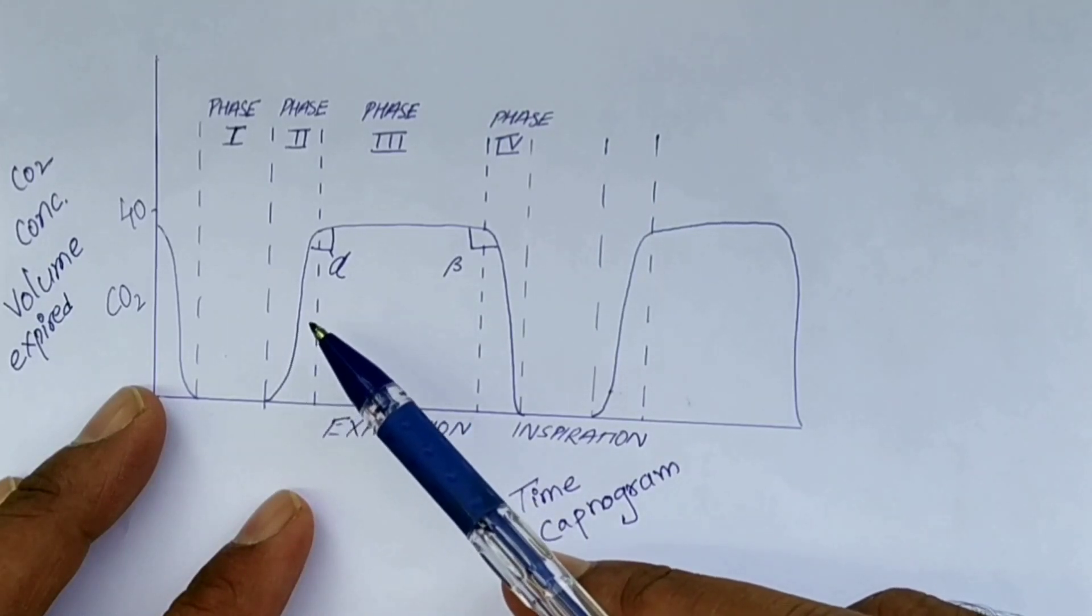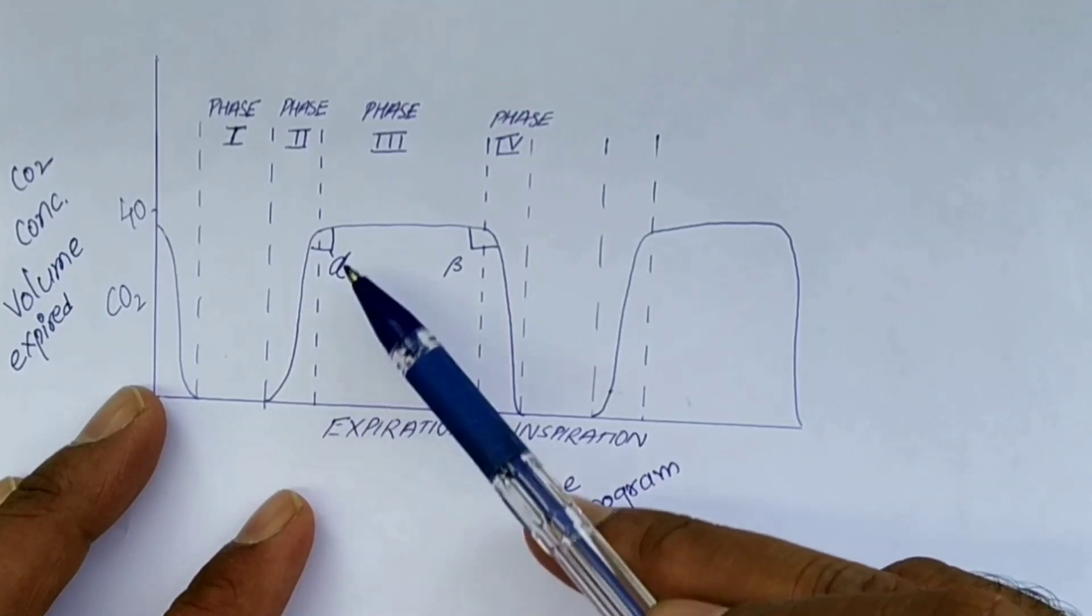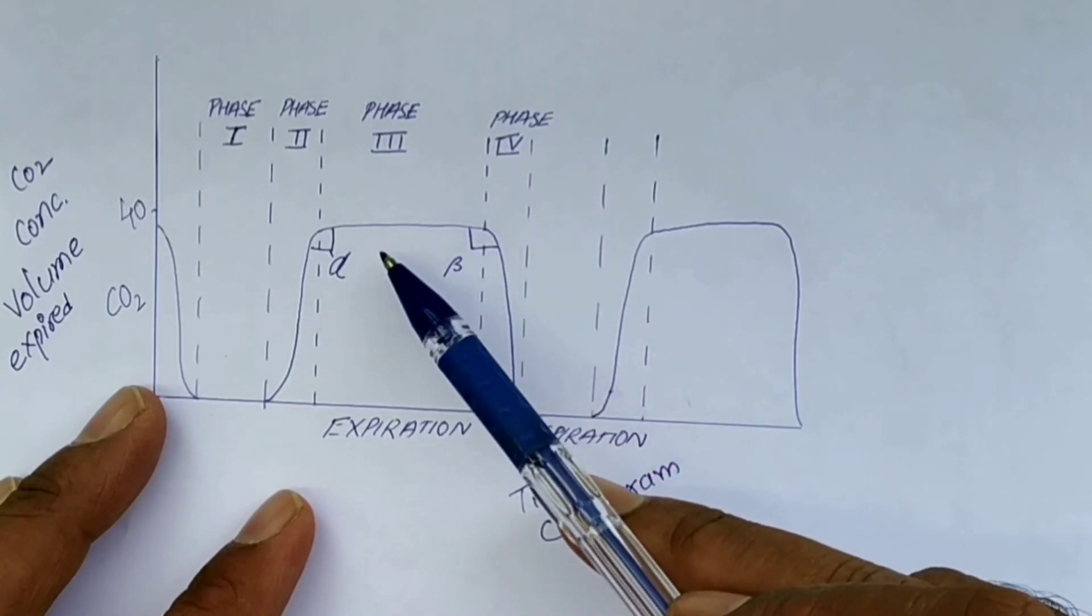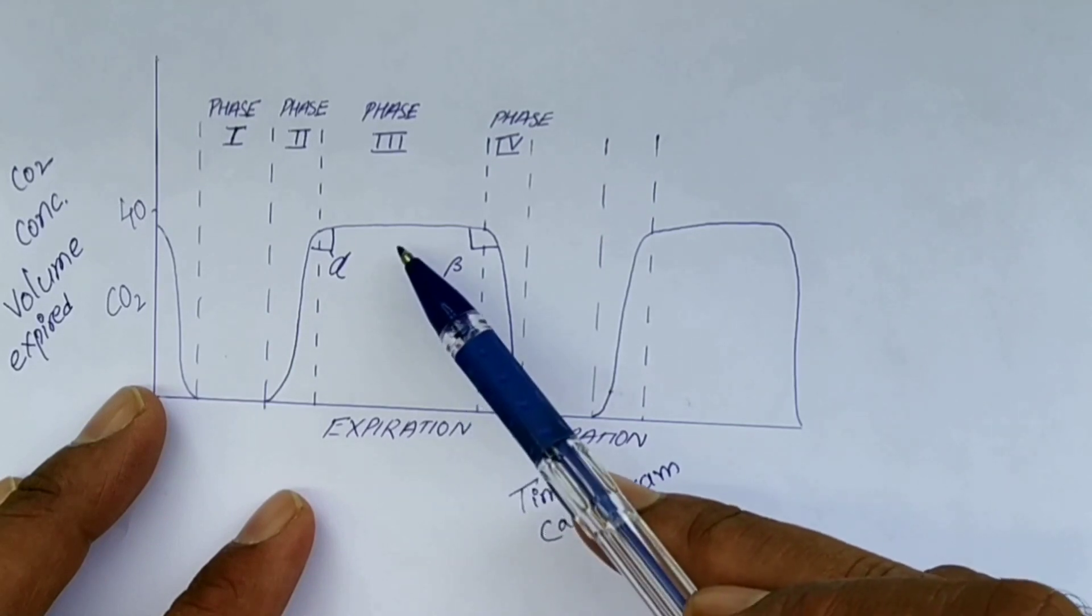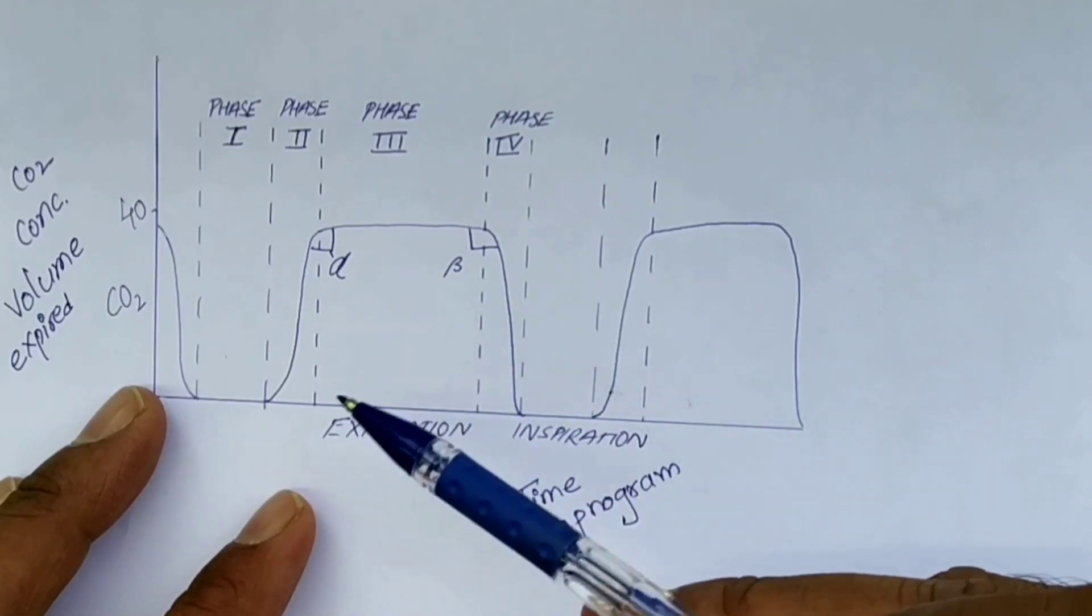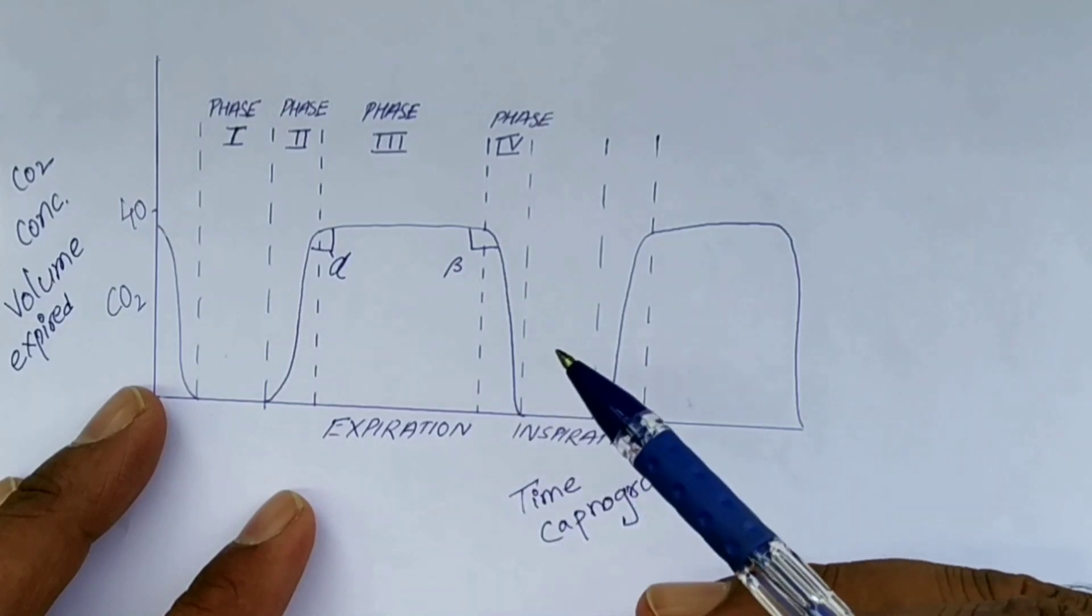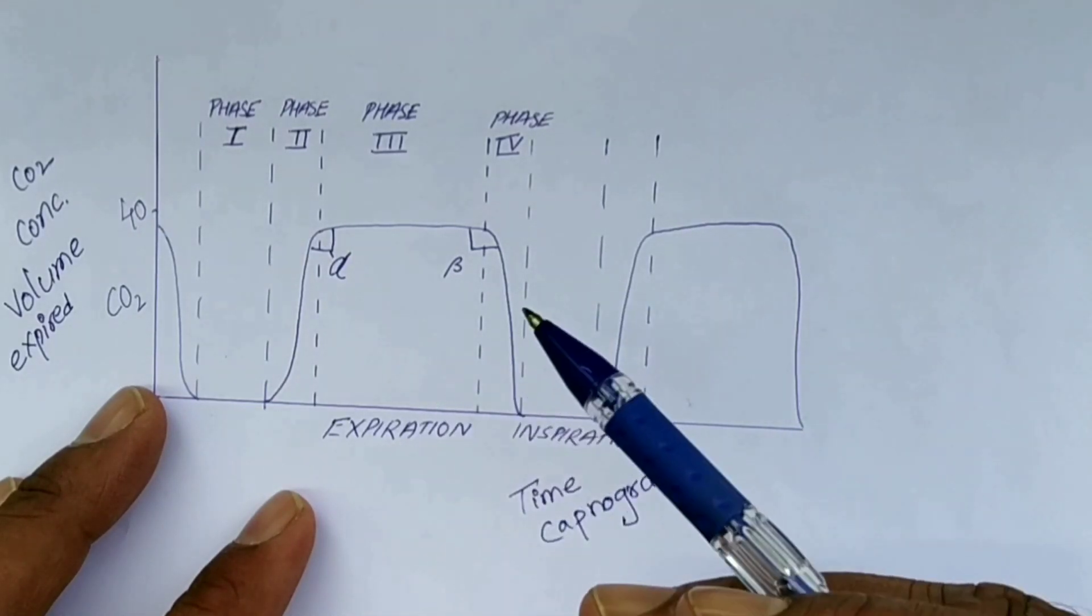Now it is in phase three, also called the alveolar plateau. This represents the CO2-rich gas from the alveoli. In the time capnogram, the alveolar plateau lasts for the greater part of the trace.